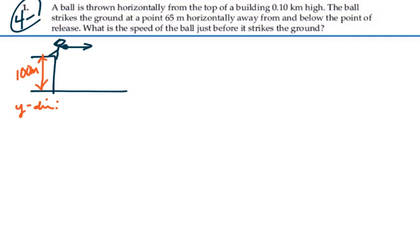There is no initial velocity in the y direction. And hence, we have an acceleration of a positive 9.8 meters per second squared. And our displacement, delta y, is 100 meters. Let's find our time.